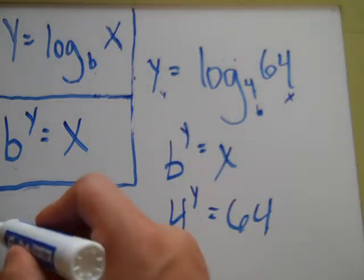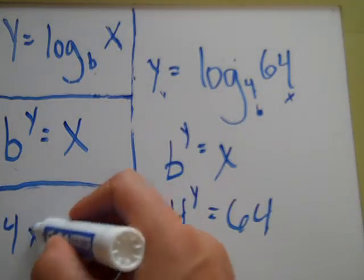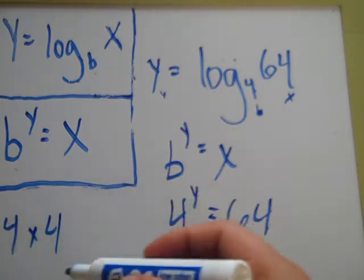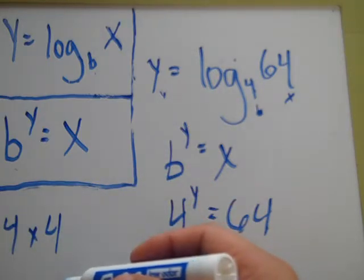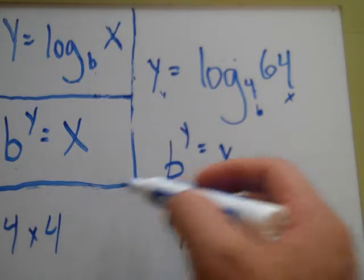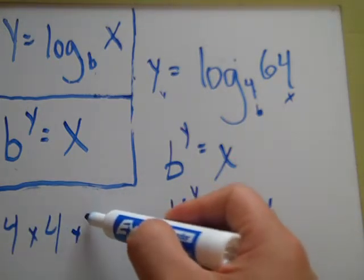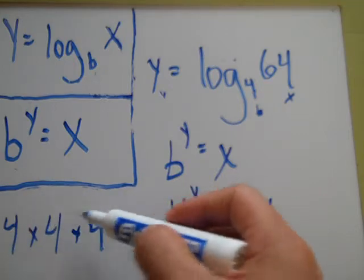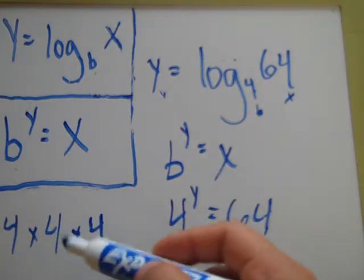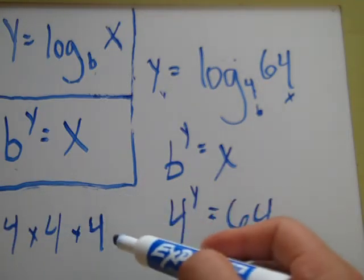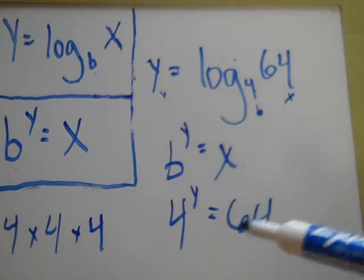Without using your calculator, you can find that pretty easy. 4 times 4 is 16. So, 4 to the 2nd power is not going to work. If you raise it to the 3rd power, then 4 times 4 is 16, 16 times 4 is indeed 64.